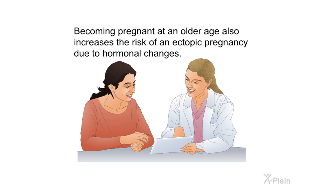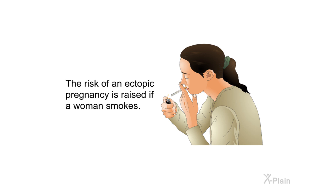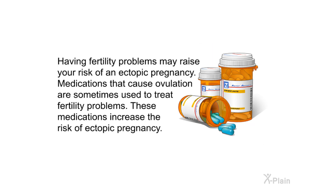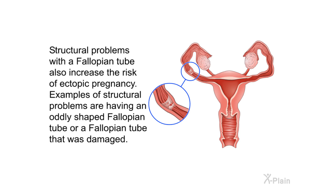Becoming pregnant at an older age also increases the risk of ectopic pregnancy due to hormonal changes. The risk is also raised if a woman smokes. Having fertility problems may raise your risk, and medications that cause ovulation — sometimes used to treat fertility problems — increase the risk of ectopic pregnancy. Structural problems with a fallopian tube, such as an oddly shaped or damaged fallopian tube, also increase the risk.